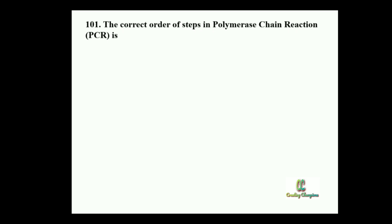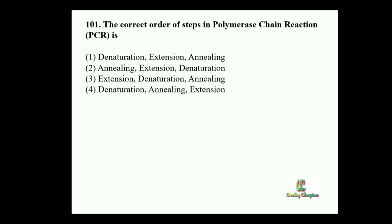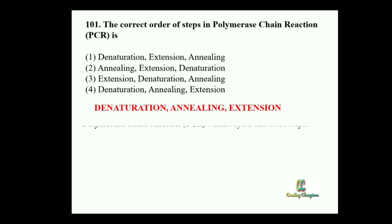Question number 101: The correct order of steps in polymerase chain reaction (PCR). Option 1: Denaturation, extension, annealing. Option 2: Annealing, extension, denaturation. Option 3: Extension, denaturation, annealing. Option 4: Denaturation, annealing, extension. This is a direct question. The answer is denaturation, annealing, extension.